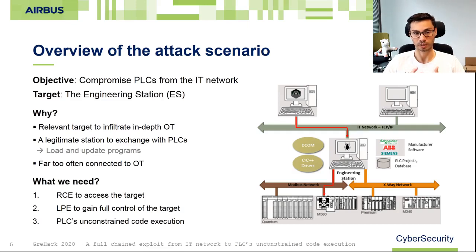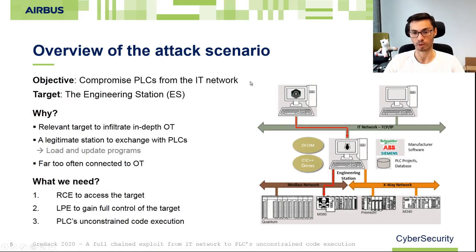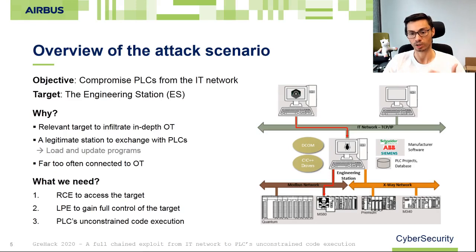Our objective is to compromise PLCs from the IT network by targeting the engineering station. This station can be used as a bridge or a kind of gateway to reach the OT network from an IT network, even if recommendations advocate not to connect such a station to both IT and OT networks. In real life you can see that happen, or you can imagine the station is first connected to the IT network then disconnected and reconnected to the OT network to do things like loading or updating programs to a PLC.